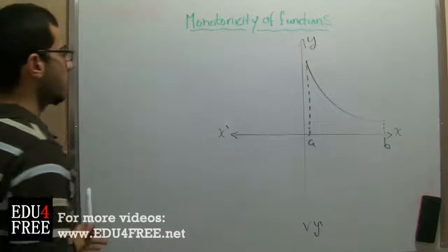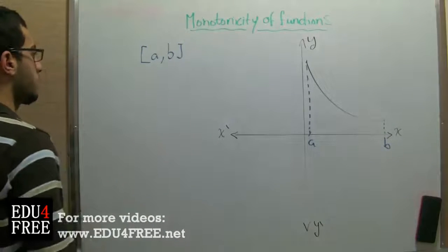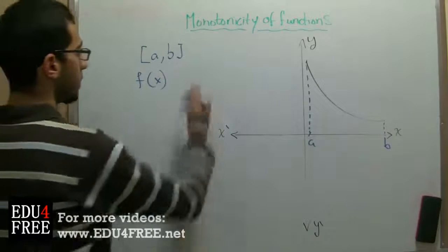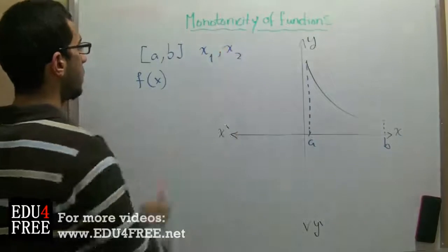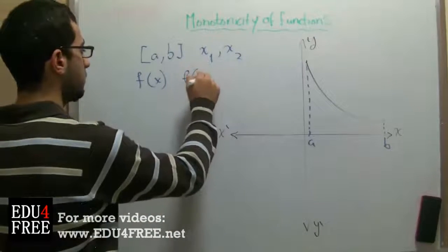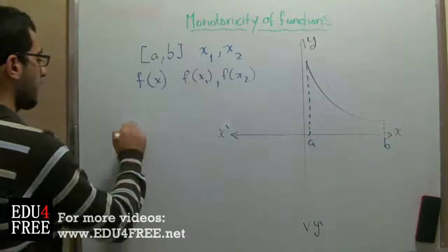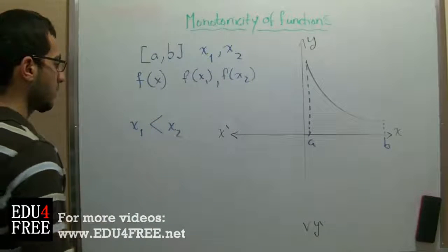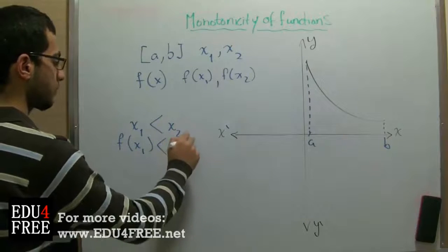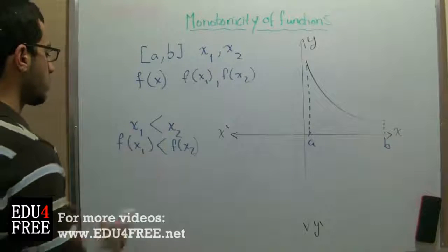The rule is: if we have an interval a and b and we have a function f, we pick two values x1 and x2 which belong to this interval and we get f(x1) and f(x2). If x1 is less than x2 and f(x1) is less than f(x2), the signs here are the same, and at that moment the function will be increasing.